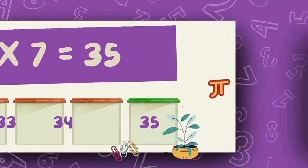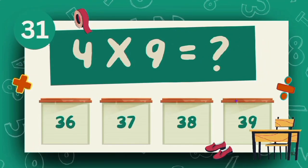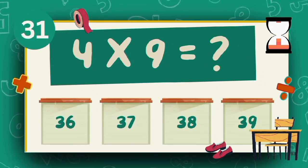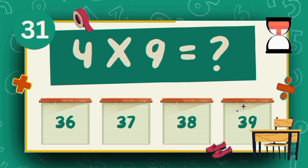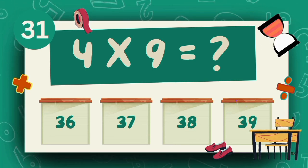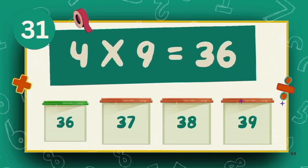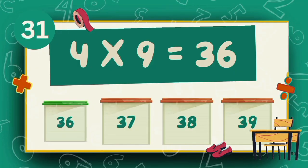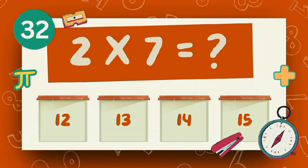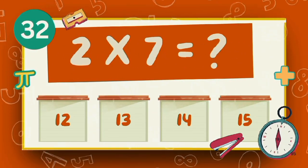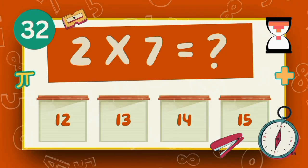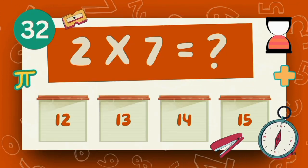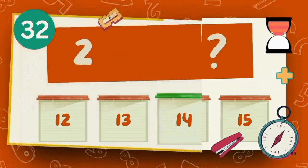What does 4 multiply 9? The answer is 36. What does 2 multiply 7? The answer is 6.